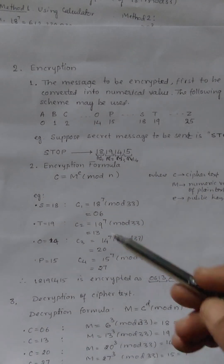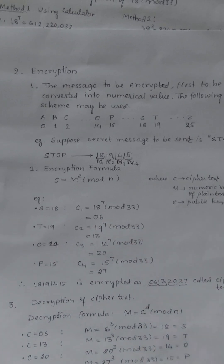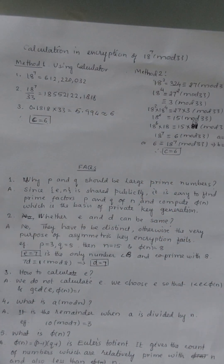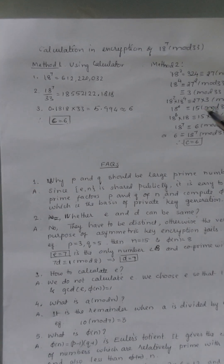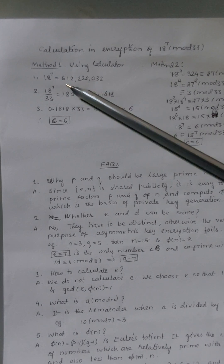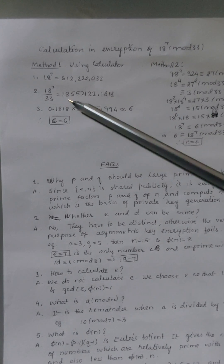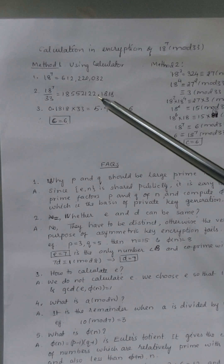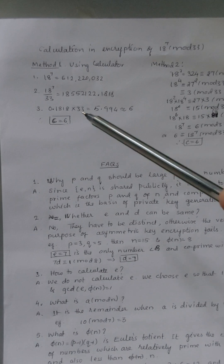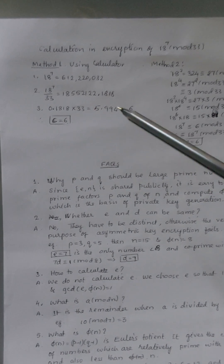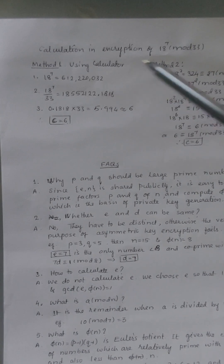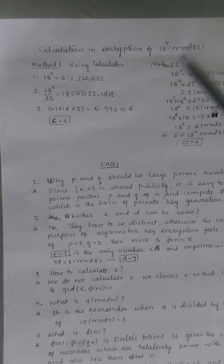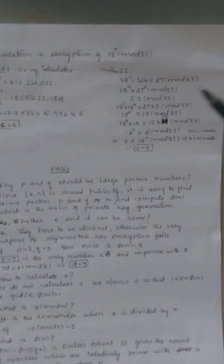Now let's show how 18^7 mod 33 = 6. If the numbers are small, you can use a calculator: find 18^7, which gives a large number, divide by 33 to get a decimal number, then multiply only the decimal part (0.1818...) by 33, giving approximately 5.994, which rounds to 6. So 18 is encrypted as 6.